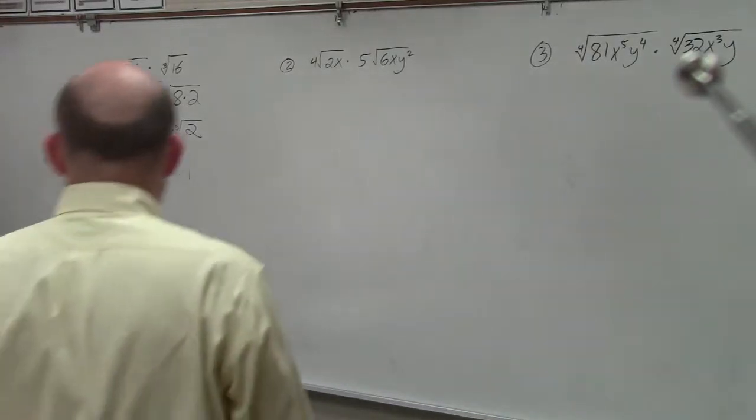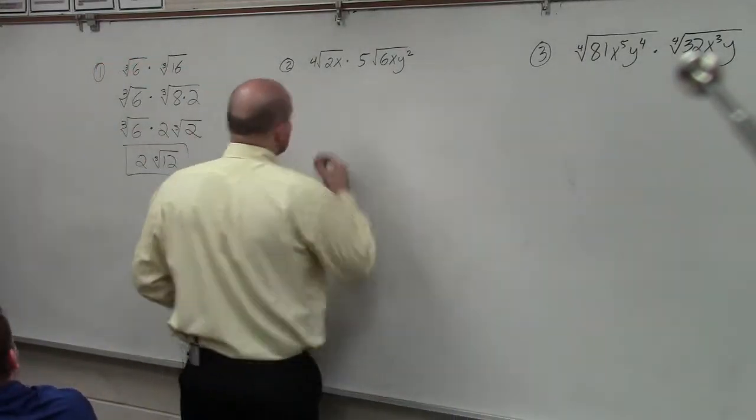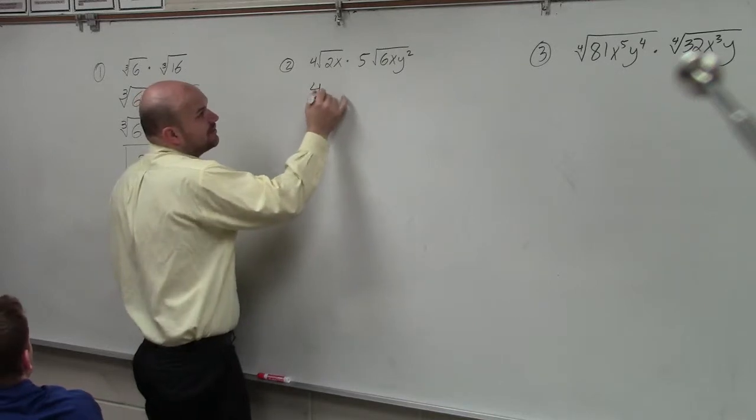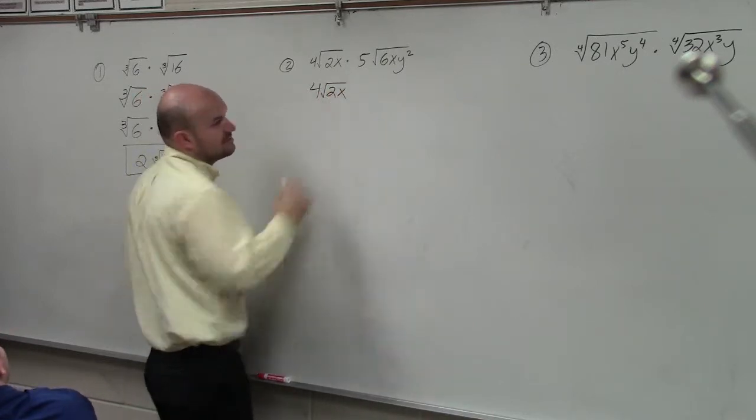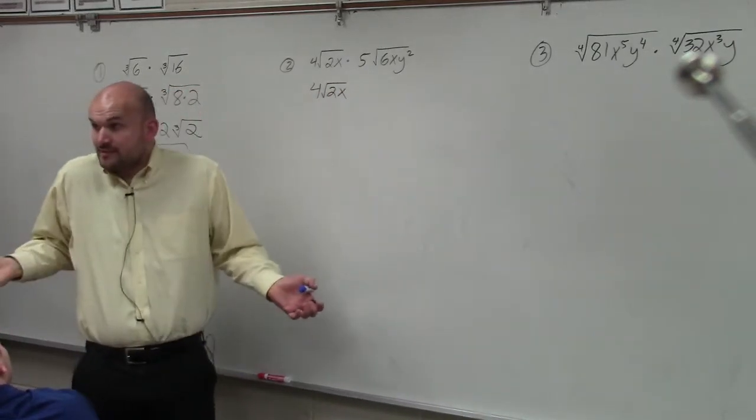Again, now we're dealing with square roots. In this example, I can't simplify the square root of 4 times 2x, so I'm just not going to do anything with it. It's simplified.